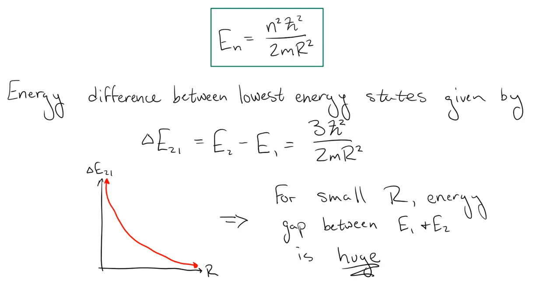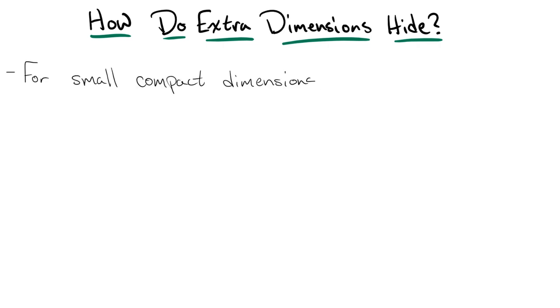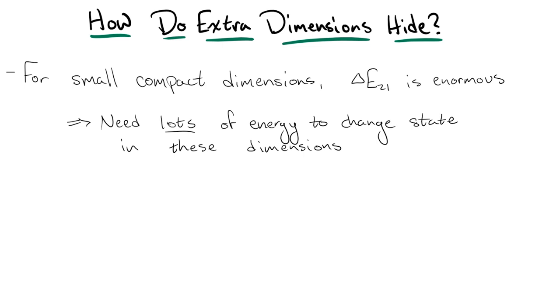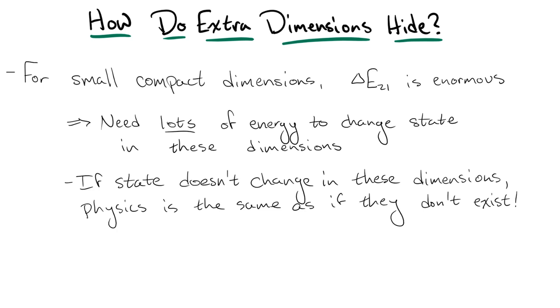If this loop is actually an extraspatial dimension and the bead is any particle, we see exactly how extra dimensions could hide from detection. To actually change a particle's state in this extra dimension, it would need a tremendous amount of energy. If the state of the particle never changes in the extra dimensions, the physics is the same as if the dimension doesn't exist. Now, the theories which incorporate extra dimensions typically involve unifying quantum mechanics with gravity. So, it's reasonable to assume that r is the order of a Planck length, the length scale which is typically associated with this type of unification.